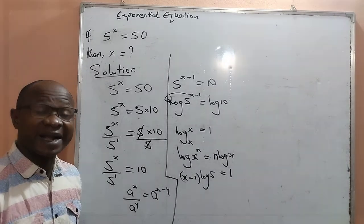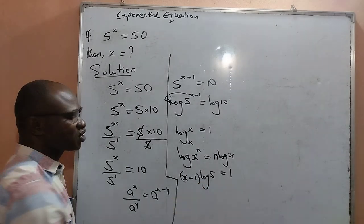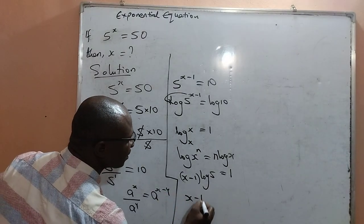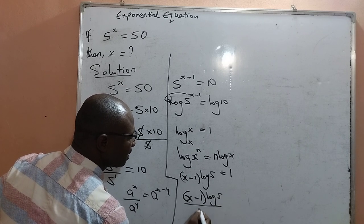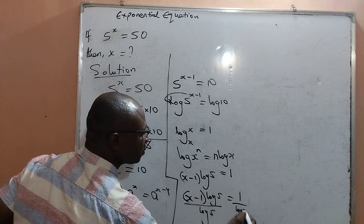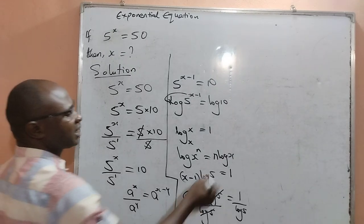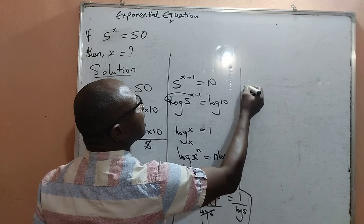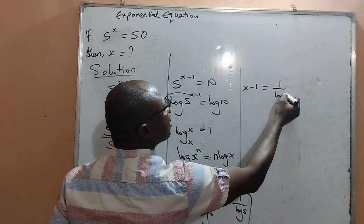At this point, I can divide both sides of the equation by log 5. The essence of it is to get rid of this log 5 from the left-hand side. And that means x minus 1 multiplied by log 5 divided by log 5 is equal to 1 divided by log 5. So that log 5 from the left-hand side will cancel out, and that will give us x minus 1 equal to 1 all over log 5.